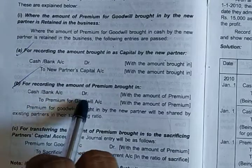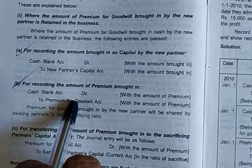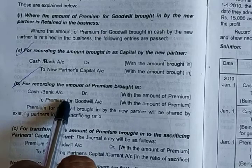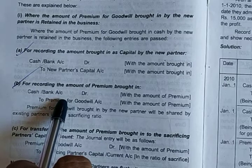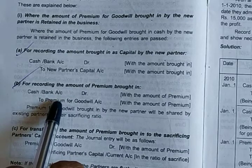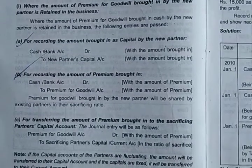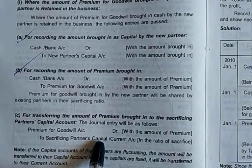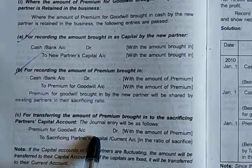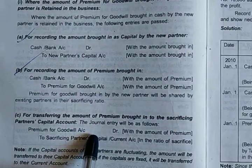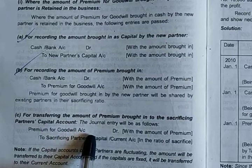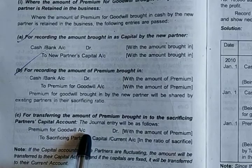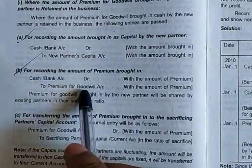This premium for goodwill is brought by the new partner for the sacrificing partners. So this premium for goodwill will be distributed to the sacrificing partners in the sacrificing ratio. For this you require one more journal entry: premium for goodwill account debit to sacrificing partners' capital account, in the sacrificing ratio. So the amount brought by the new partner will be distributed among the sacrificing partners in the sacrificing ratio. So total there are three entries.